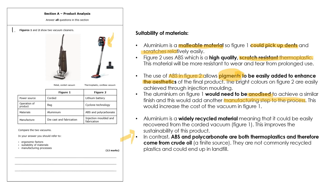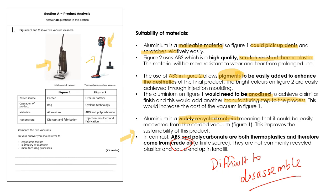On sustainability: aluminium is widely recycled, so it could be recovered from the corded vacuum, making that product relatively sustainable. In contrast, ABS and polycarbonate are thermoplastics from crude oil, a finite source. These plastics are not commonly recycled, could end up in landfill especially if difficult to disassemble, and require specialist recycling facilities — potentially making the ABS vacuum more problematic than the aluminium one at end of life.